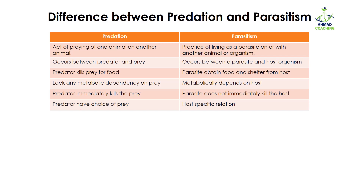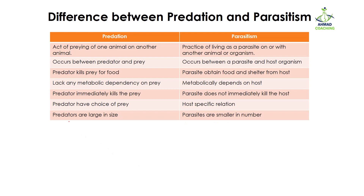In predation, predators have a choice of prey — they can eat any prey available at that particular time. For example, a cat can eat a mouse as well as a fish, so it has choices. In parasitism, the host relationship is specific — one type of parasite lives on a specific host and cannot live on another host.